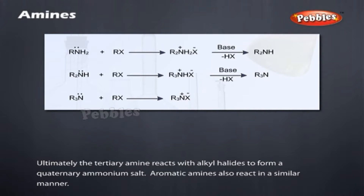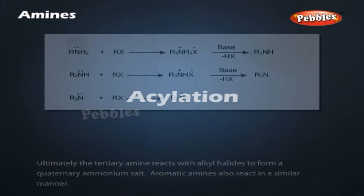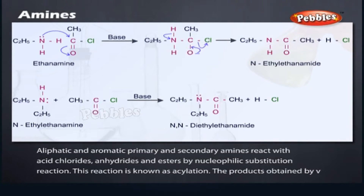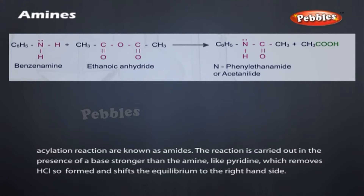Acylation: Aliphatic and aromatic primary and secondary amines react with acid chlorides, anhydrides, and esters by nucleophilic substitution reaction. This reaction is known as acylation. The products obtained by acylation reaction are known as amides. The reaction is carried out in the presence of a base stronger than the amine, like pyridine, which removes HCl so formed and shifts the equilibrium to the right-hand side.